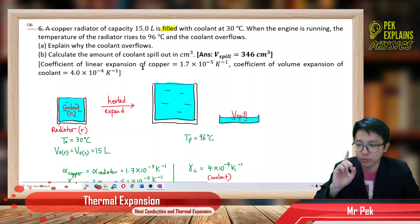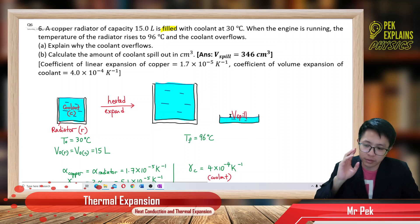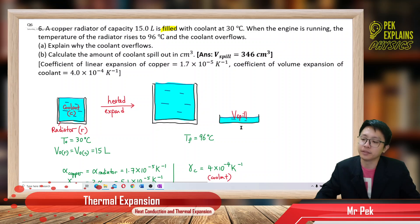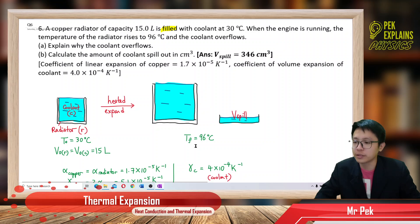So there is some coolant being spilled out. This is the volume of coolant spilled at the final temperature of 96 degrees Celsius.